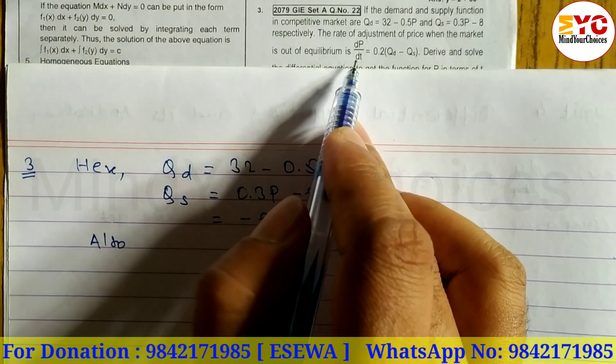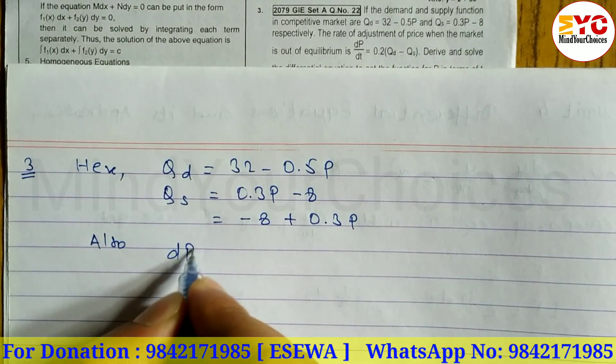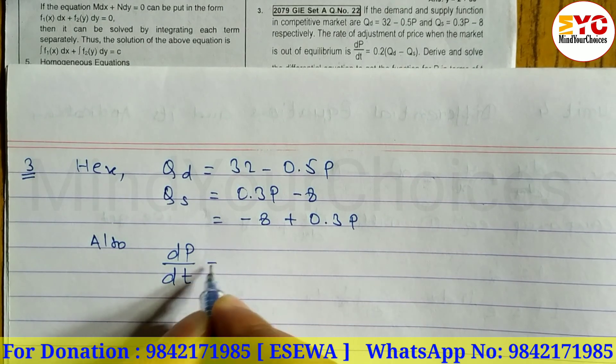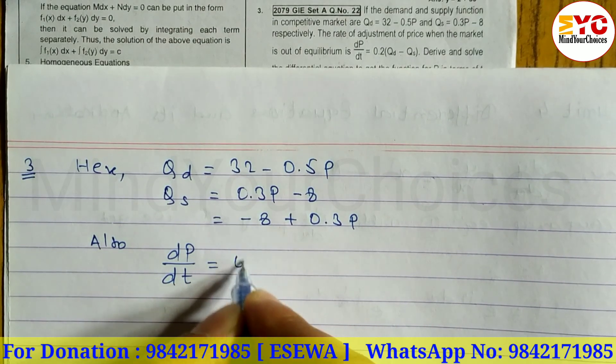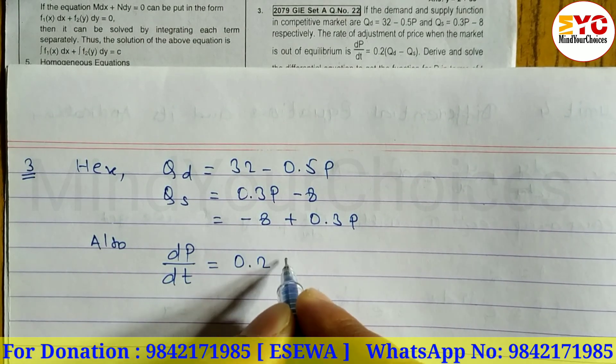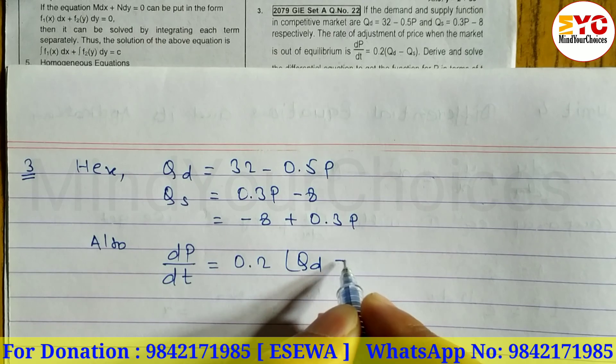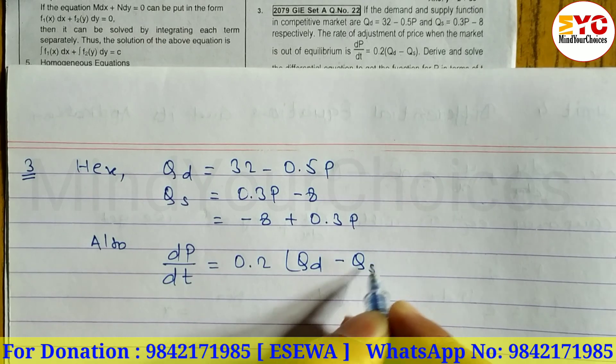The given equation is dp/dt equals 0.2 times (qd minus qs).